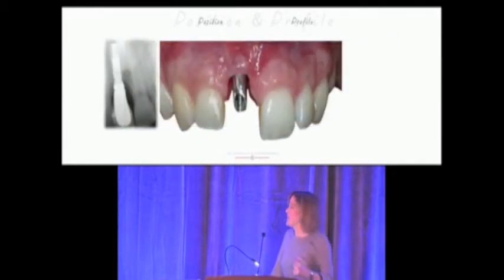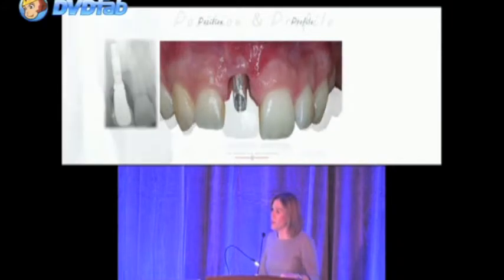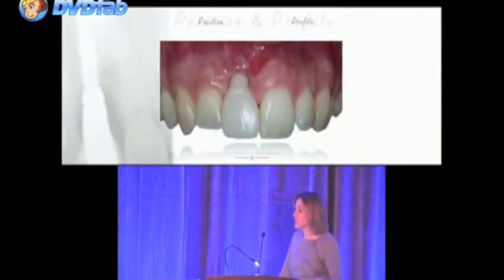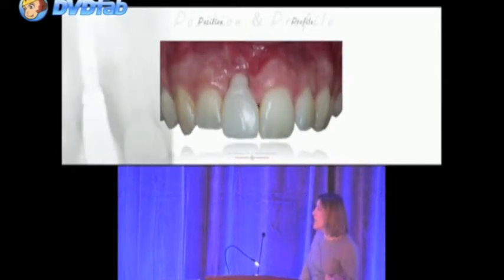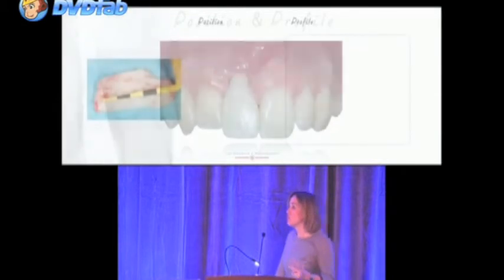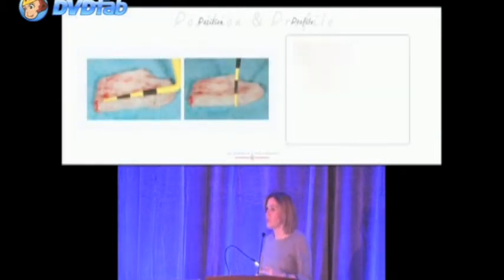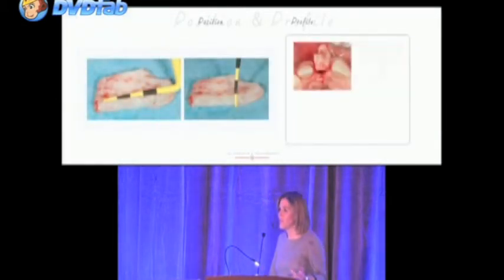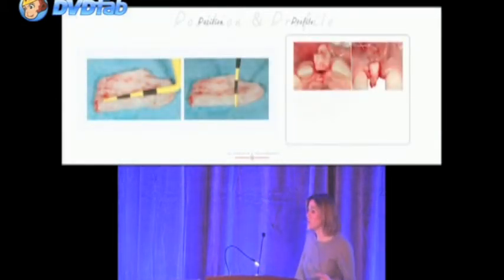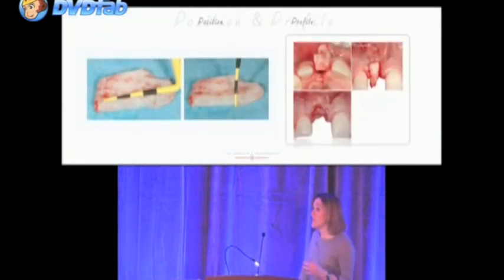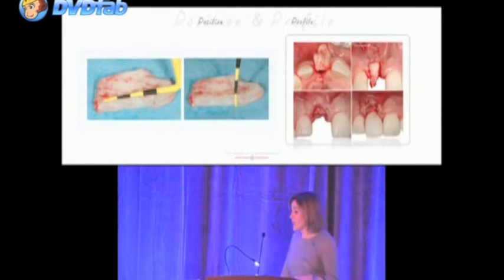In a case like this, I make a provisional restoration — a screw retained into the implant — and we perform two connective tissue grafts in two different surgeries. These are very thick grafts, placed through a tunnel technique.